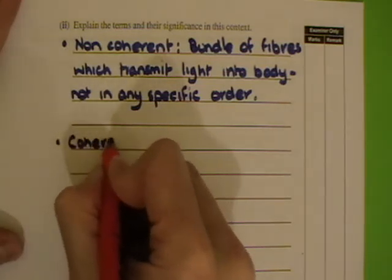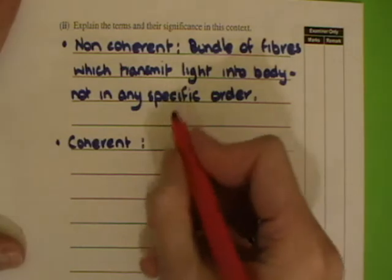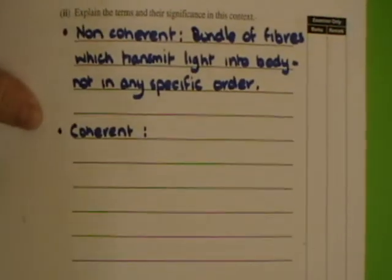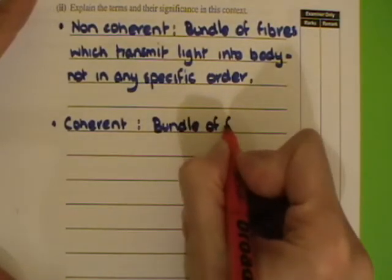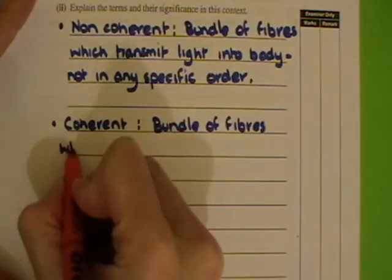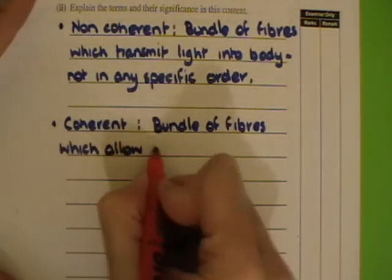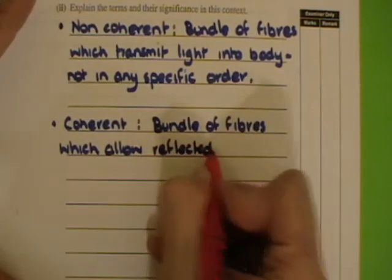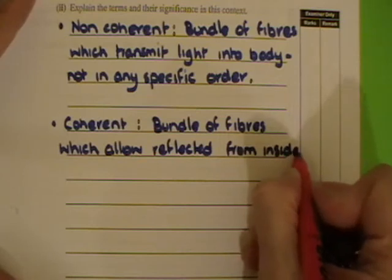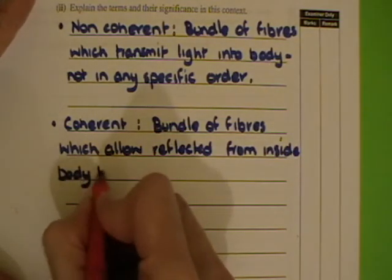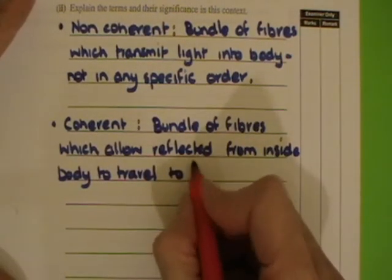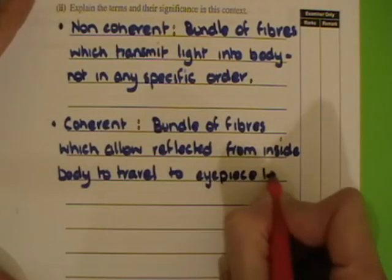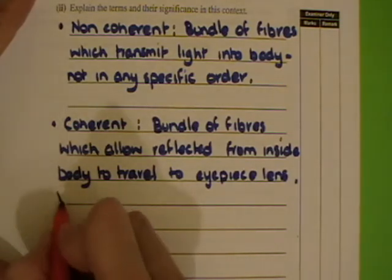Coherent then — and note the quality of written communication marks here, so be careful that you're writing in proper sentences. The coherent bundle is a bundle of fibers which allow reflected light from inside the body to travel to the eyepiece lens. They are very carefully ordered.